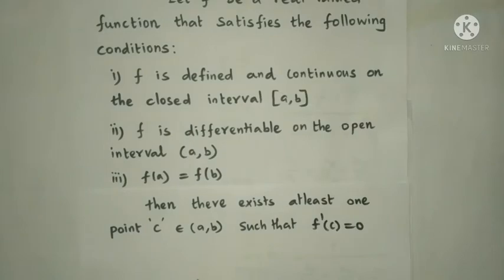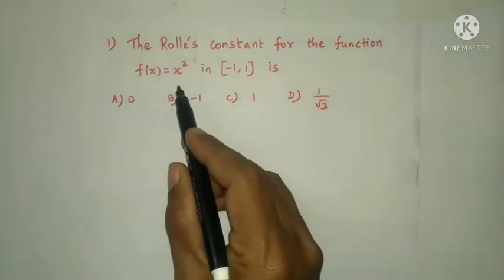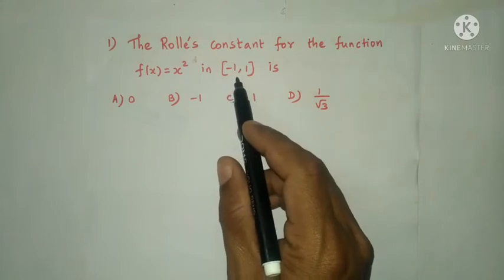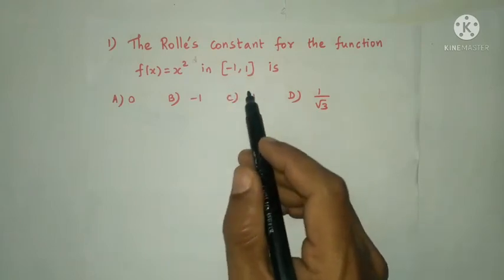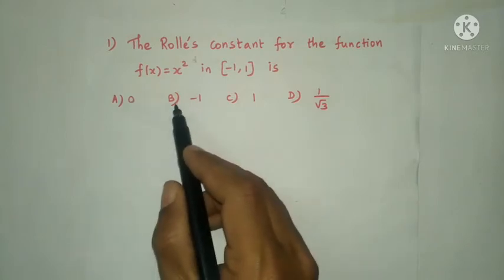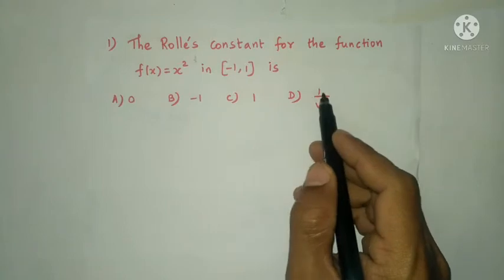Now we look at previous year questions on Rolle's theorem. First question: the Rolle's constant for the function f(x) = x² on the closed interval [-1, 1] is? Option A is 0, option B is -1, option C is 1, option D is 1 by root 3.